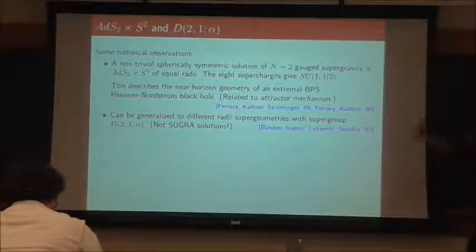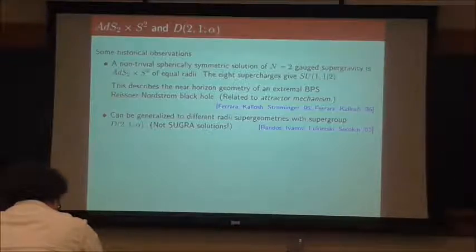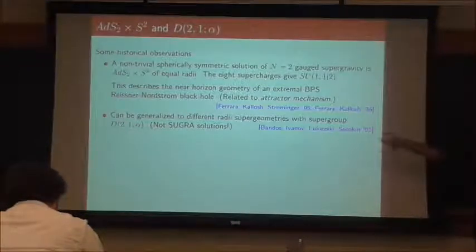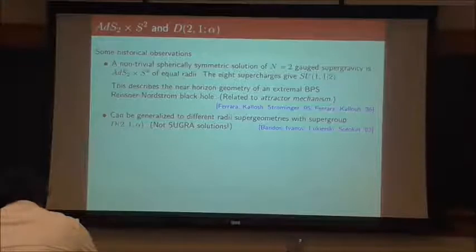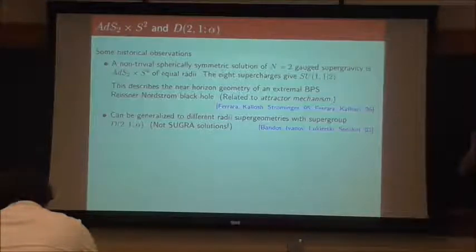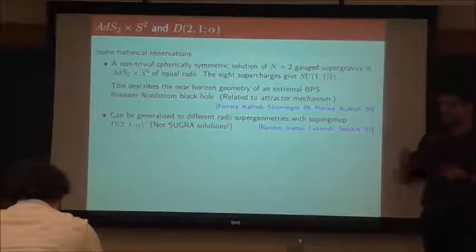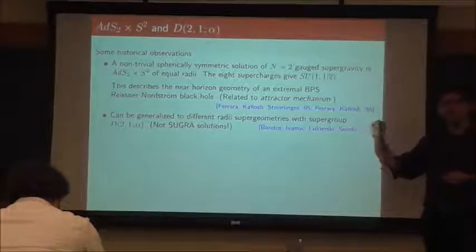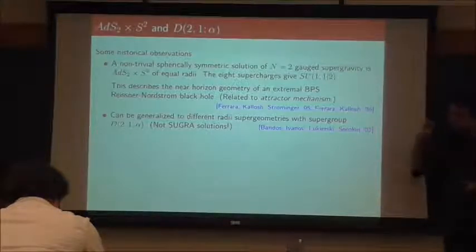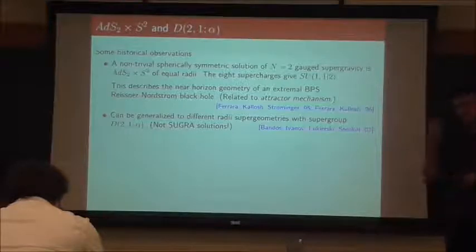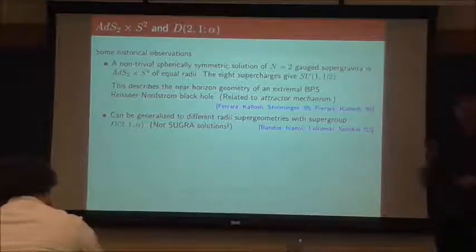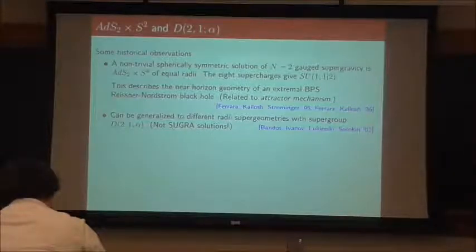The interesting thing is that these D(2,1;α) rigid backgrounds with unequal radii are not supergravity solutions. So these rigid backgrounds cannot be found as vacuum solutions in any four-dimensional theory, and you can actually argue this with very weak assumptions — even if you couple to matter. The precise statement is: take any 4D N=2 conformal supergravity, couple it to arbitrary two-derivative actions of vectors and hypermultiplets. When you look at the allowed fully supersymmetric solutions, you have Minkowski, AdS₄, AdS₂×S² of equal radii, and the plane-wave version. That's all.